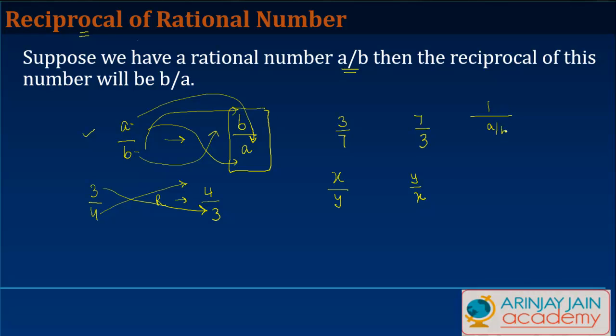So we'll write a upon b as 1 divided by a upon b. If I multiply both the numerator and the denominator by b, what do I get? I get 1 into b, and then I get a upon b into b. This gets cancelled with this, and I get b upon a as the answer, which is what we have discussed.